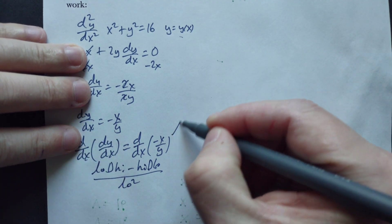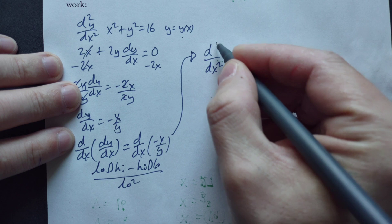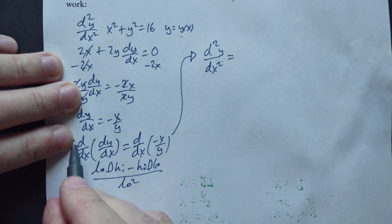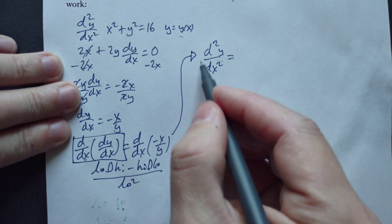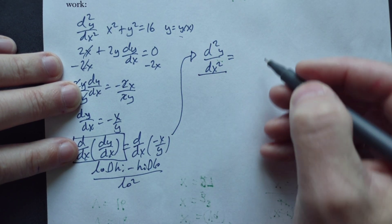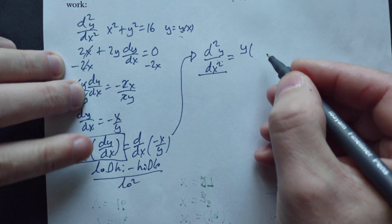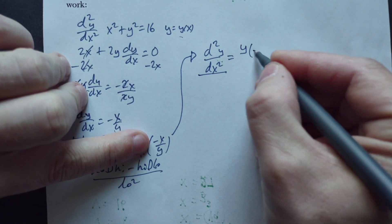Start differentiating this part. You're going to have the second derivative with respect to x of y. Differentiate low d high. The low one is y, and the derivative of the high one is derivative of negative x, which is negative 1.